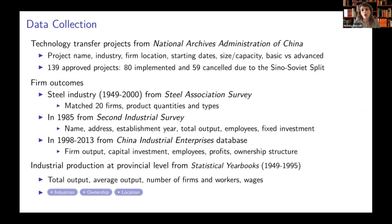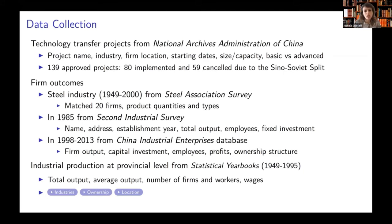In terms of data, we collected information on the 139 projects approved under this program from the National Archives Administration of China. To perform our empirical analysis, we match this data with steel industry data that had annual reports on the performance of 92 steel firms in operation between 1949 and 2000 in China. In 1985 and between 1998 and 2013, we match our plants with all the plants included in the second industrial survey and in the China Industrial Enterprise Database. We complement this data with province- or county-level data from statistical yearbooks for the years in which they are available.